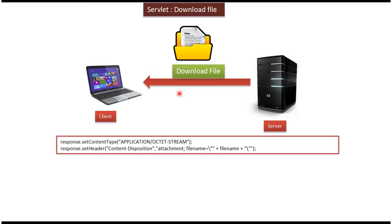In this video tutorial I will cover how to download a file from the server using a Servlet. In order to download a file from the server we have to do two important things: first, we have to set the content type of the response to application/octet-stream, and we have to set the content disposition header and specify the attachment.